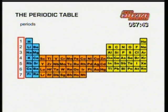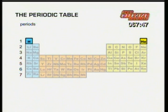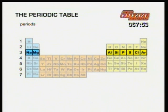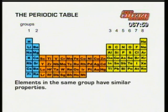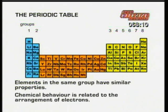The periods across the table represent which electron shell is filling up — shell 1, shell 2, shell 3, and so on. Because they have the same number of electrons in their outer shell, elements in the same group have similar properties. The periodic table helps us understand and predict all kinds of patterns of chemical behaviour, because chemical behaviour is related to the arrangement of electrons.